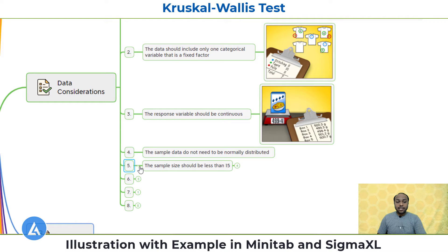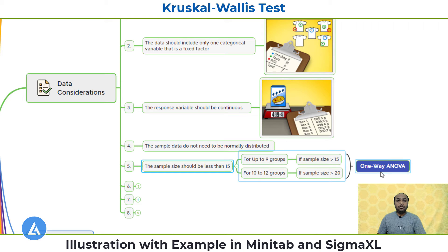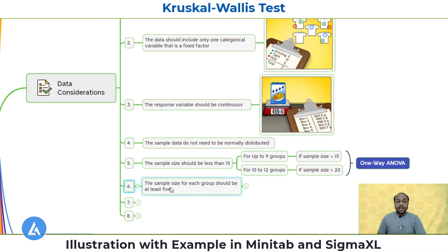The fifth data consideration is that the sample size should be less than 15. If the sample size is more than 15 for up to 9 groups, or more than 20 for 10 to 12 groups, then we use one-way ANOVA instead, because one-way ANOVA is a parametric test with more power than a non-parametric test. The sixth data consideration is that the sample size for each group should be at least 5. If less than 5, the p-value from the Kruskal-Wallis test will not be accurate.